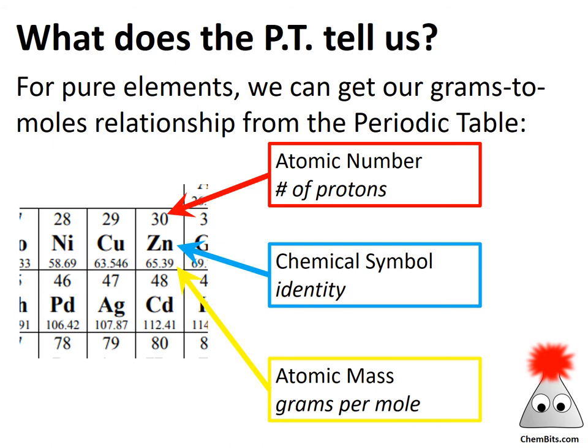There are no units shown on the periodic table because this number is also the atomic mass unit mass of a single zinc atom on average. Depending on whether we're looking at it microscopically as an atomic mass unit or macroscopically as grams per mole, we'll use that number just slightly differently with different units.